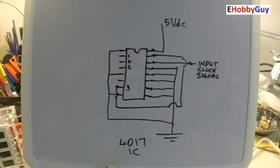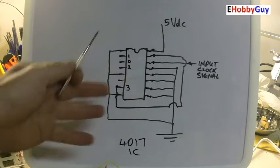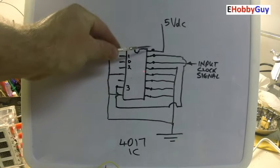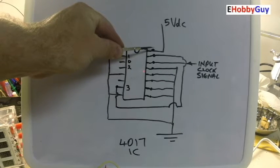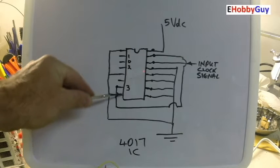Here is the 4017 decade counter and frequency divider. This is probably one of the most simple circuits you'll ever have to breadboard. You've got 5 volts VCC coming in pin 16. Pin 8 here is tied to ground.